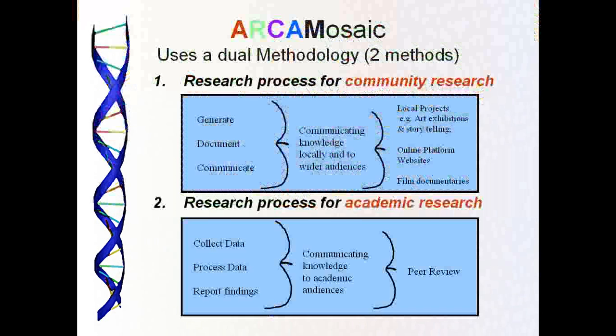The Arco-Mosaic uses a dual methodology — two methods in one: a research process for community research and one for academic research. The community research is for people themselves to generate, document, and communicate their knowledge, to both local and wider audiences. This involves local projects, art exhibitions, storytelling, online platform websites, and film documentaries.